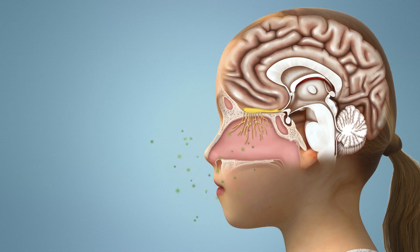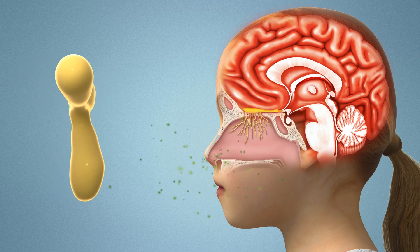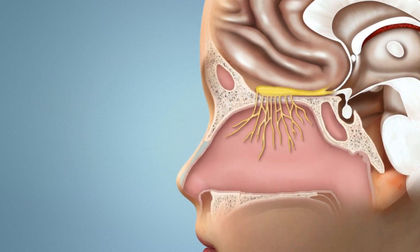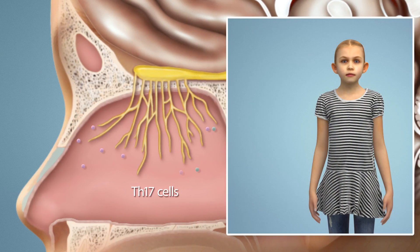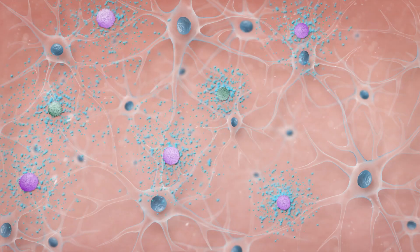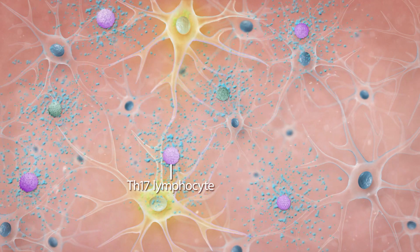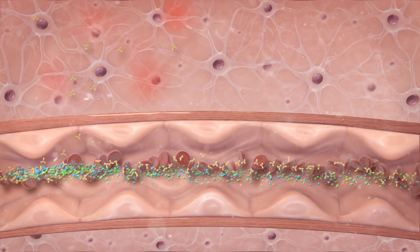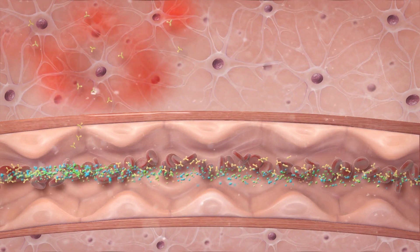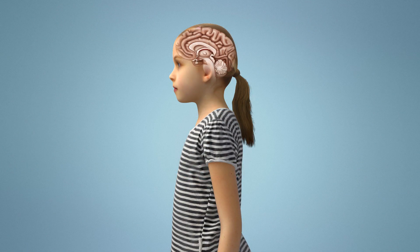Repeated untreated intranasal GAS infections in a subset of patients lead to the production of autoantibodies that may target the brain. Additionally, these infections trigger a powerful Th17 cell response in the nose or other parts of the body where the bacteria is located, such as the throat, tonsils, adenoids, skin, and/or perianal area, in order to fight the infection. Mouse studies have shown that Th17 lymphocytes play a critical role in the passage of autoantibodies across the BBB, where they interfere with neuronal function once they have entered the brain. This can lead to the abrupt onset of neurological and/or psychiatric symptoms associated with BGE disorders.